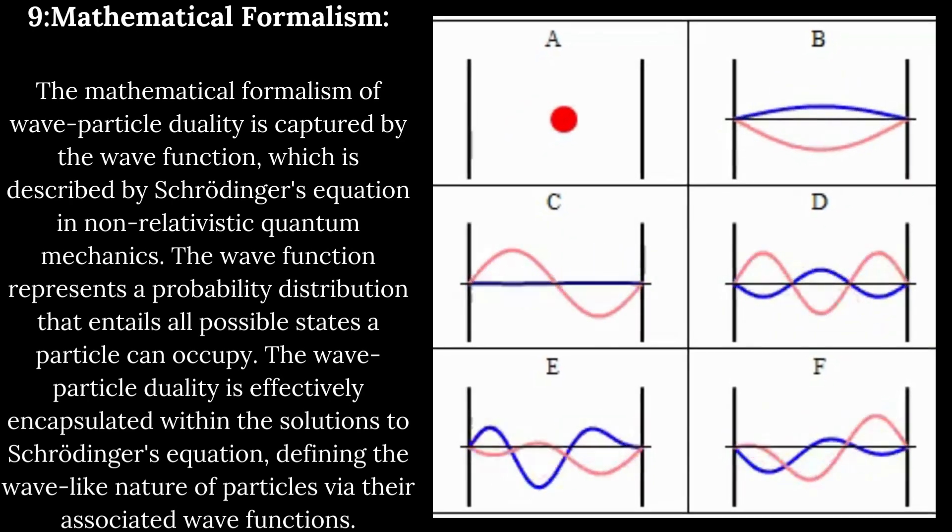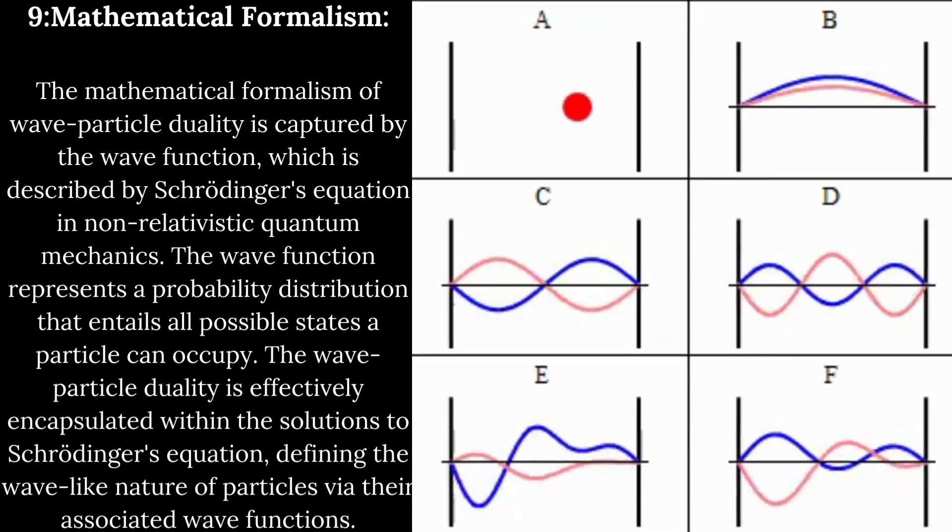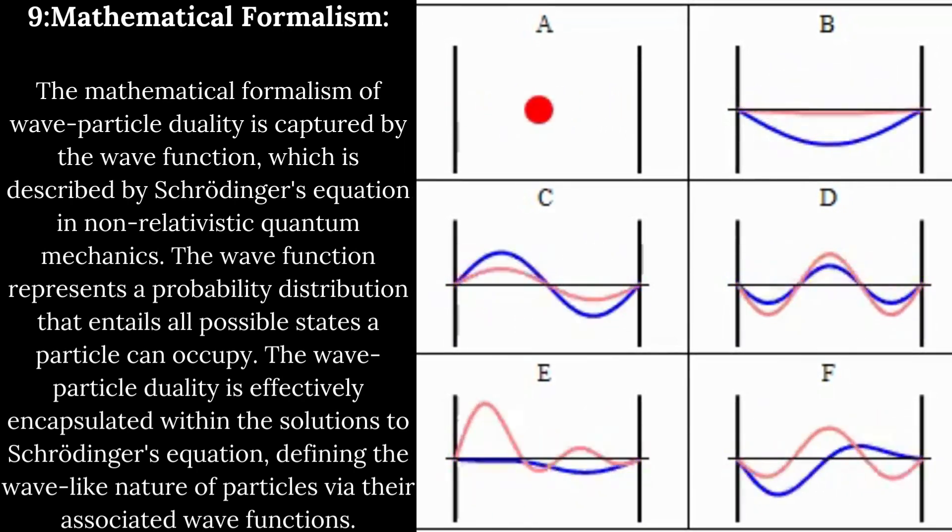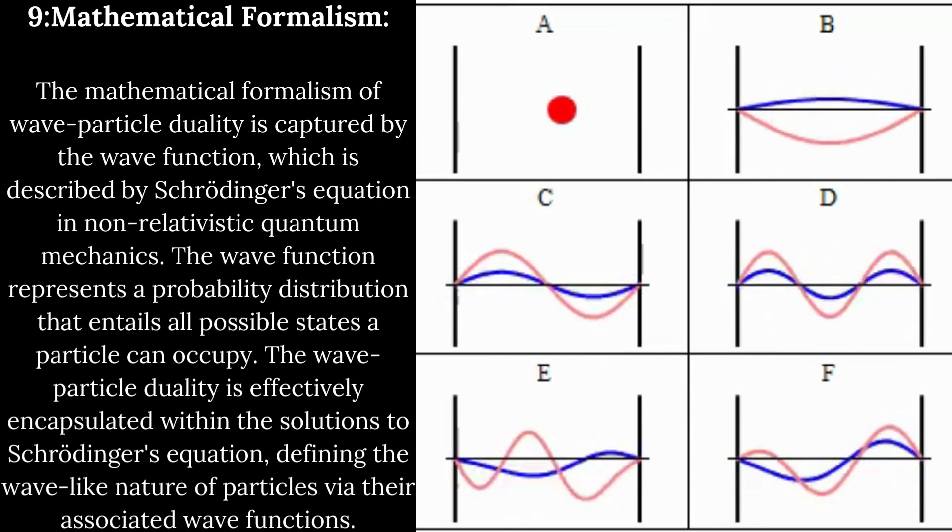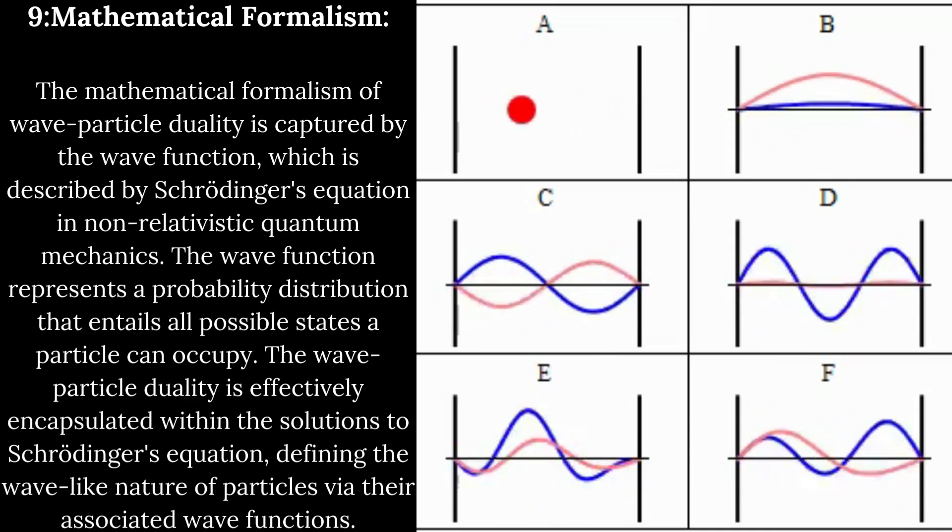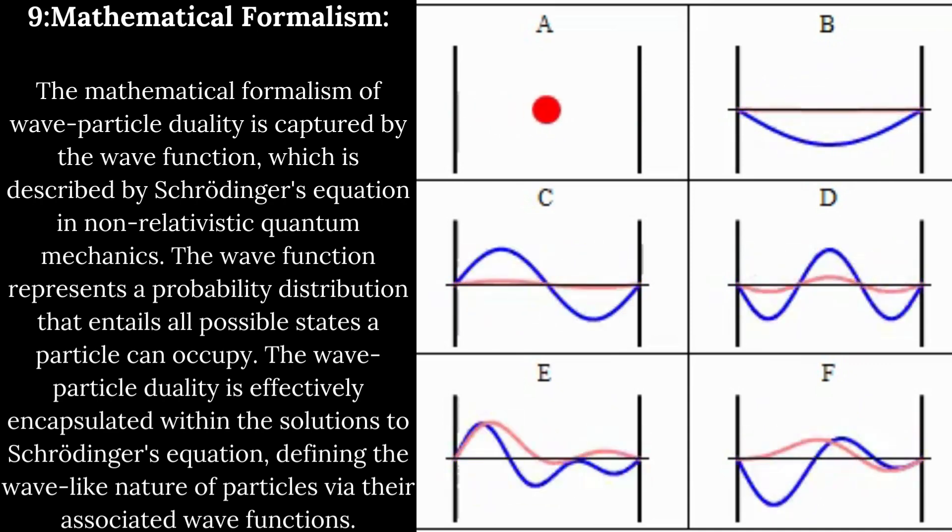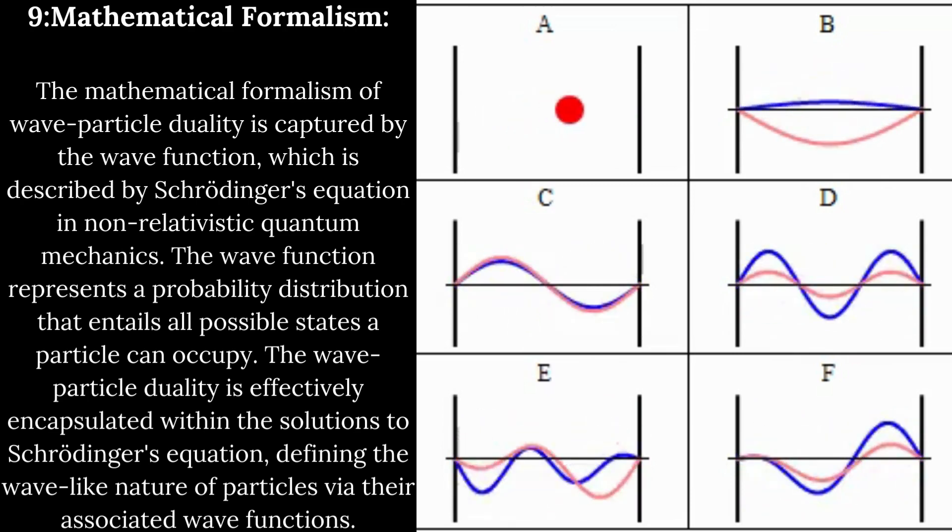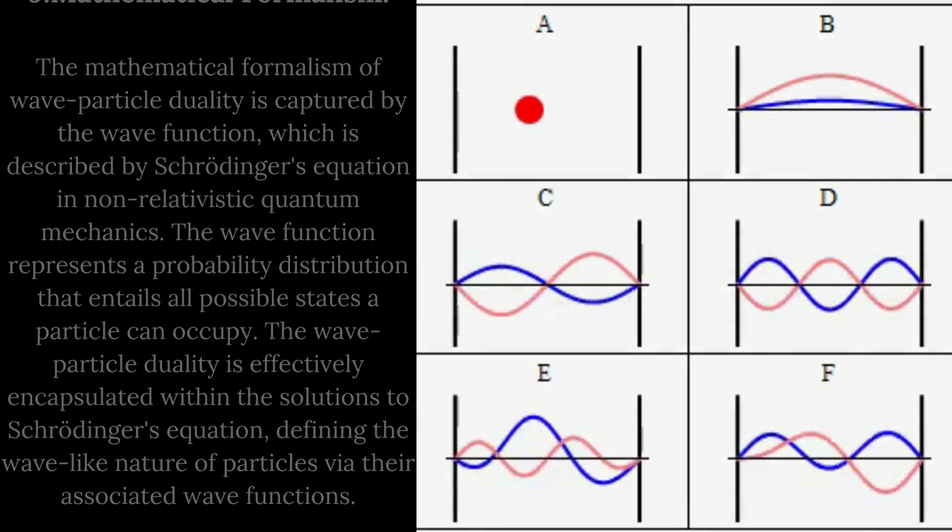Mathematical formalism. The mathematical formalism of wave-particle duality is captured by the wave function, which is described by Schrödinger's equation in non-relativistic quantum mechanics. The wave function represents a probability distribution that entails all possible states a particle can occupy. The wave-particle duality is effectively encapsulated within the solutions to Schrödinger's equation, defining the wave-like nature of particles via their associated wave functions.